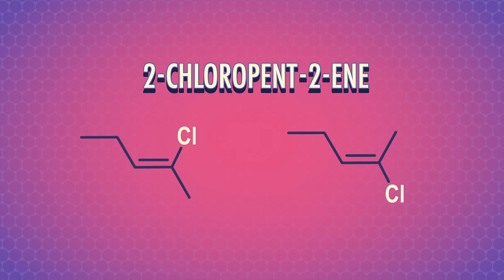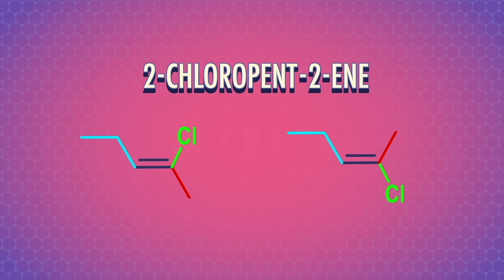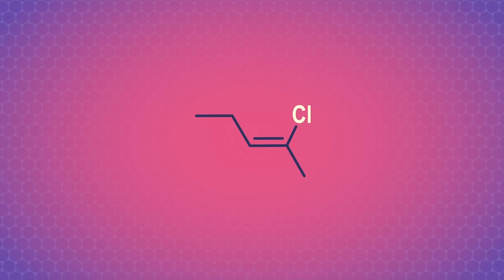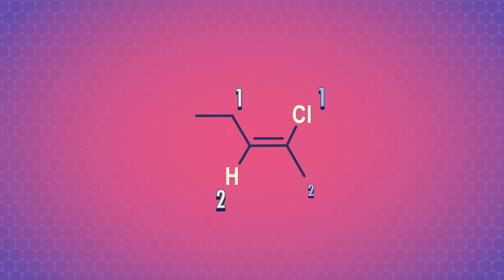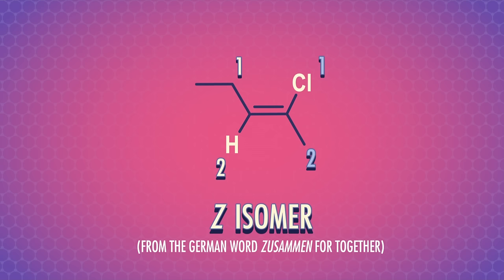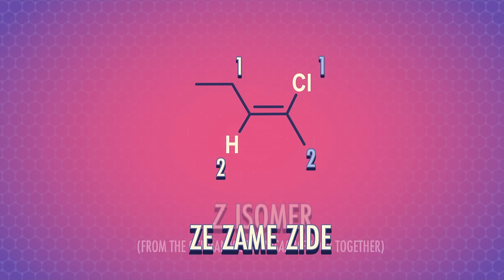Thankfully, organic chemists have us covered. Similar to assigning R and S enantiomers of molecules, we can prioritize the groups on each carbon of the double bond, using the rule that higher atomic number means higher priority. In this first isomer of 2-chloropentene, the carbon on the left side of the double bond is attached to an ethyl group and a hydrogen atom. The ethyl wins priority because its carbon has a higher atomic number than hydrogen. The carbon on the right side of the double bond is attached to a chlorine and a methyl group — the chlorine wins priority. If the high priority groups on each double bonded carbon are on the same side of the double bond, this is the Z isomer, from the German word 'zusammen' for together.